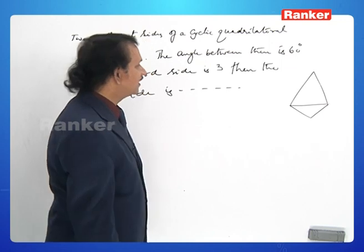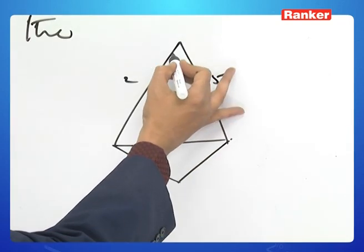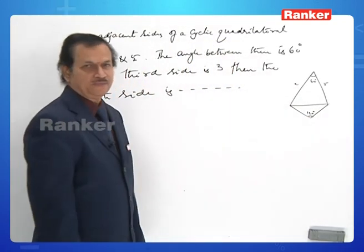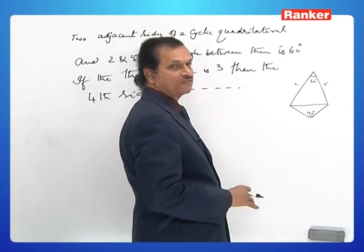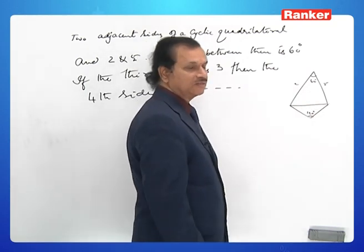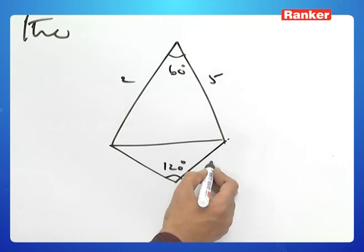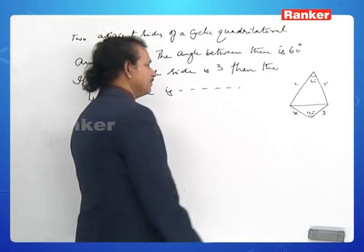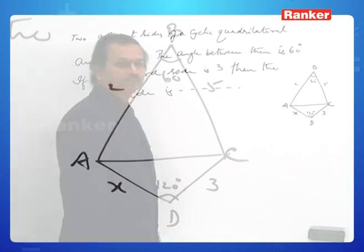In the cyclic quadrilateral ABCD, two adjacent sides AB = 2 and BC = 5 with included angle B = 60°. Since opposite angles of a cyclic quadrilateral are supplementary, angle D = 120°. The third side CD = 3 and the fourth side DA = x is required.